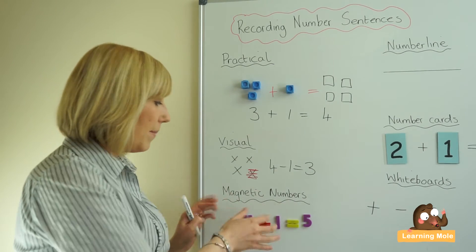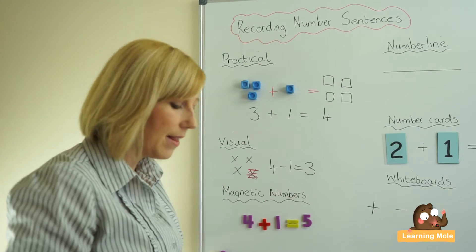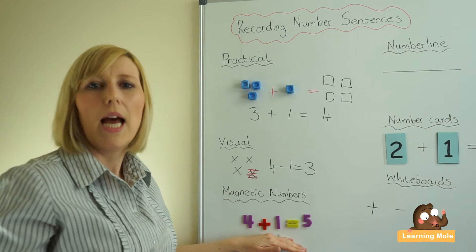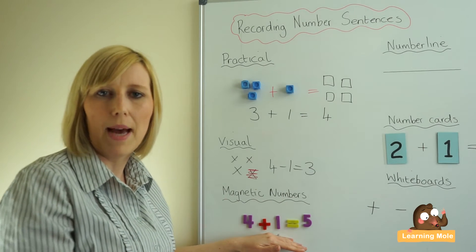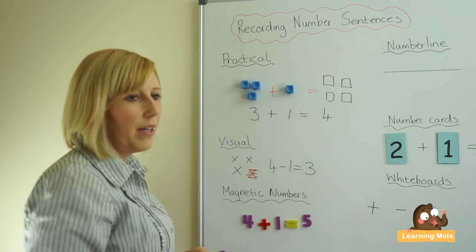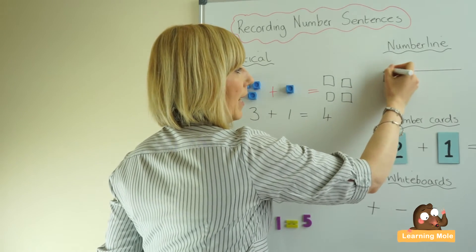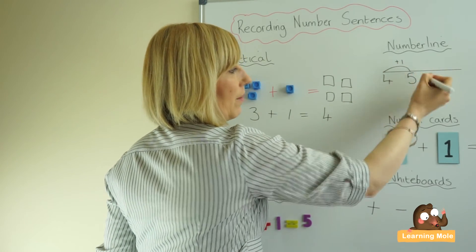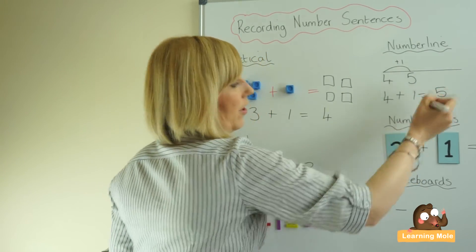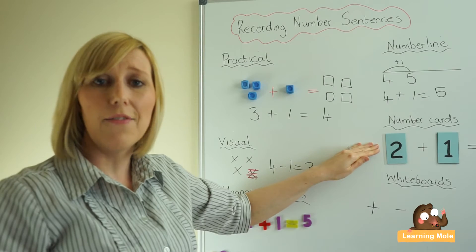Once you feel they're happy with magnetic numbers, you may want them to start using a number line to record. You might ask them to show the same calculation on a number line — we're now getting into written methods and progressing in maths. So you might ask your child to put the number four at the beginning of their blank number line, show one jump, and arrive at number five, and then record that as their number sentence.